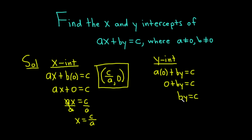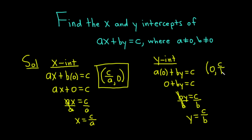Because b is not zero and y is being multiplied by b, we can divide by b to get rid of it. We get y equals c over b. You could leave it like this, but it's always better to write it as an ordered pair. We know that x is zero — that's the first coordinate — and the second coordinate would be c over b. So the y-intercept would be (0, c/b).